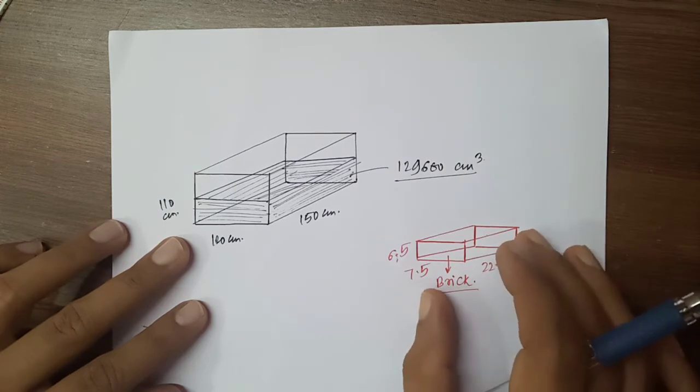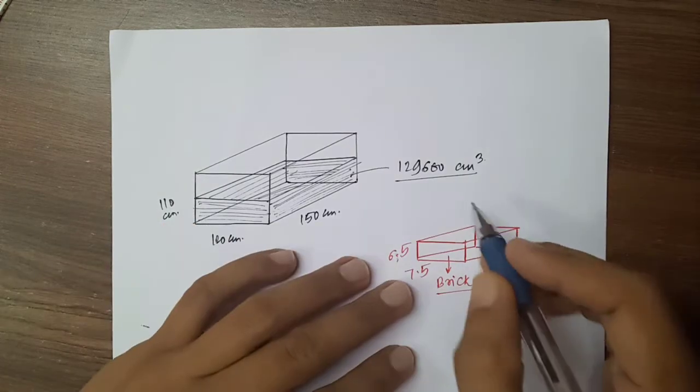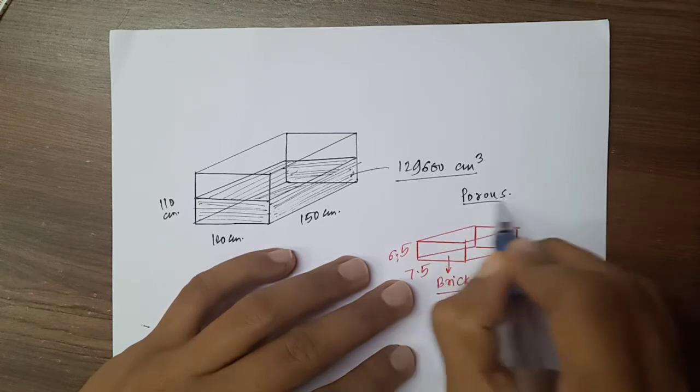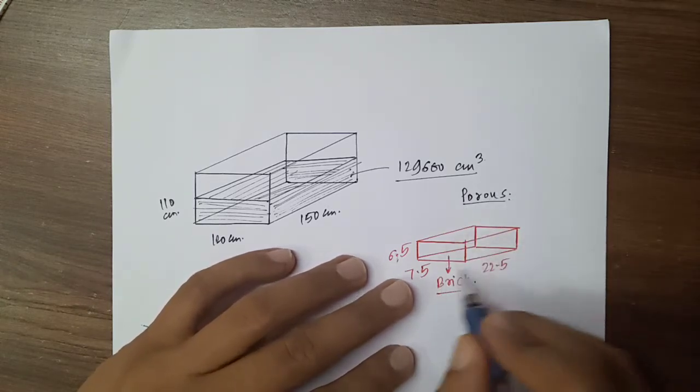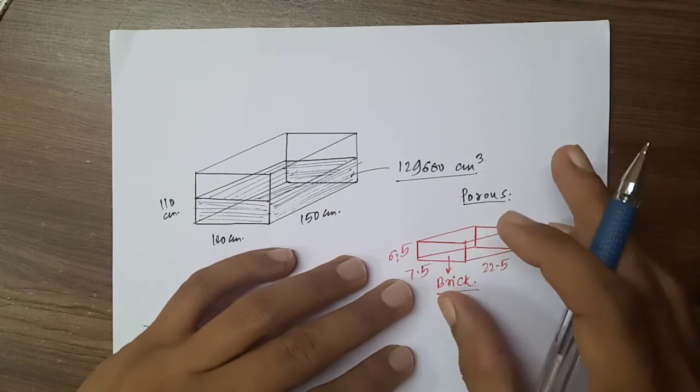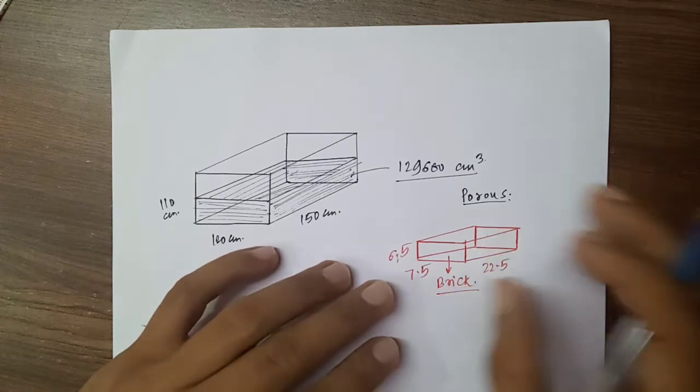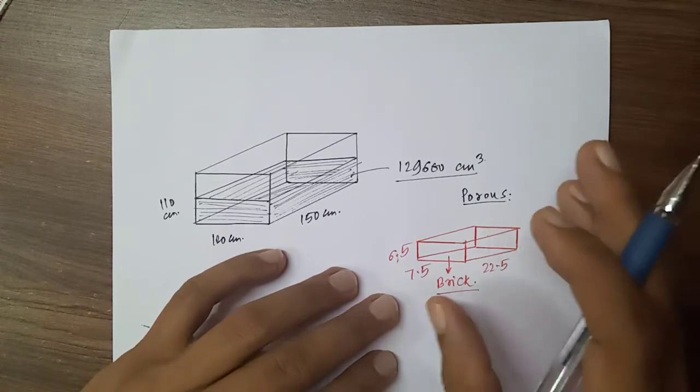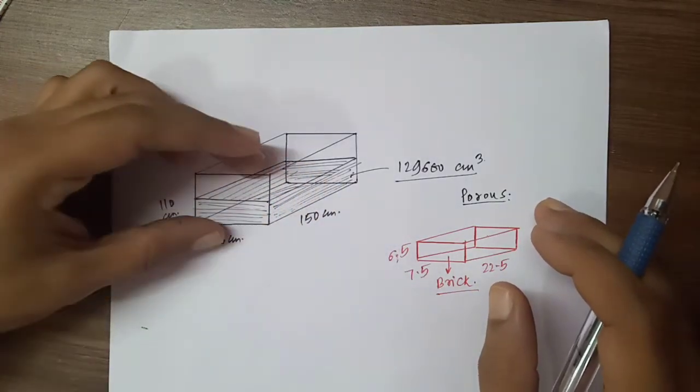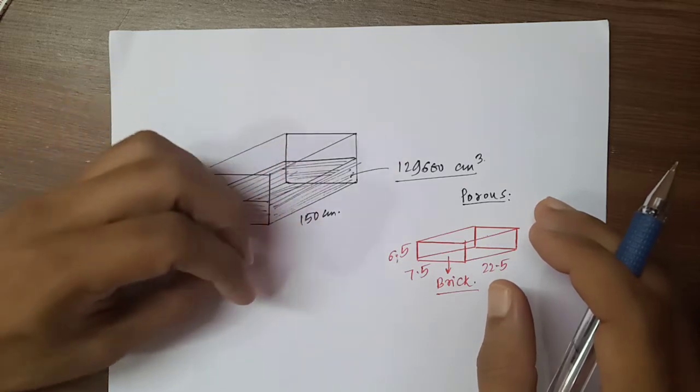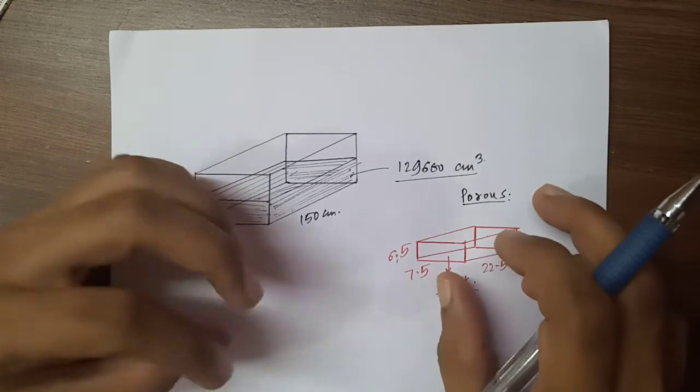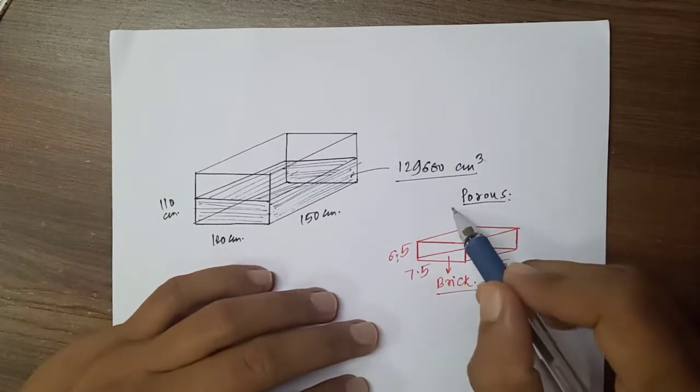And then there is a brick which is porous. What is the meaning of porous brick? The meaning of this is that the brick will absorb the water, but the size of the brick will not increase. That is what you mean by porous.